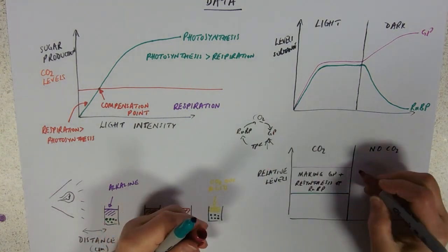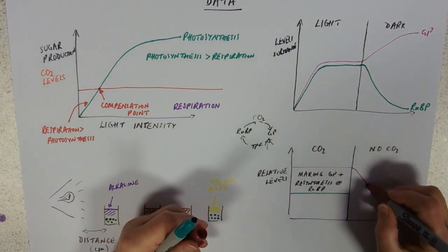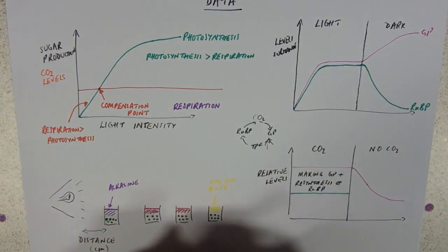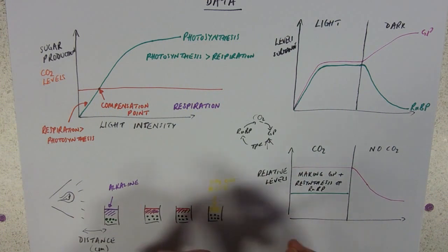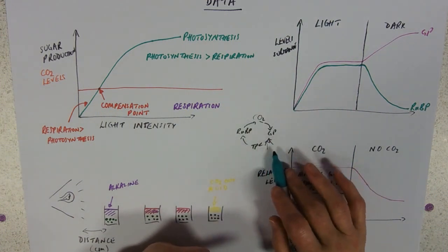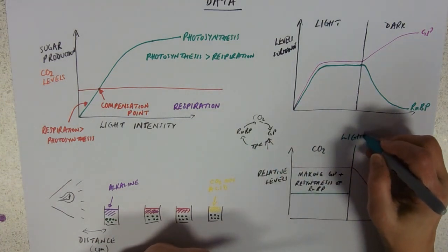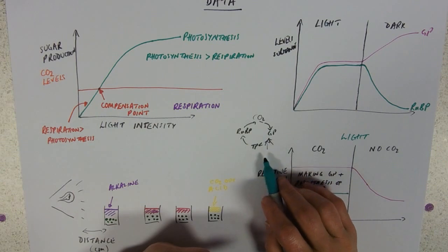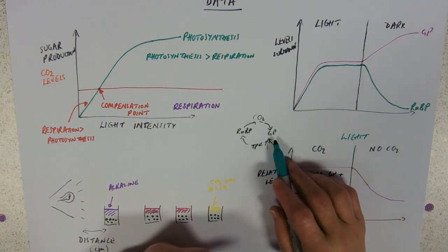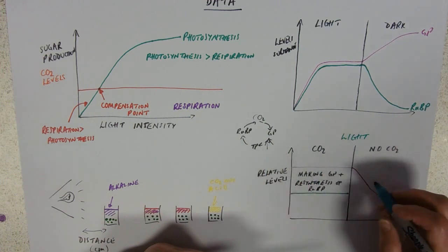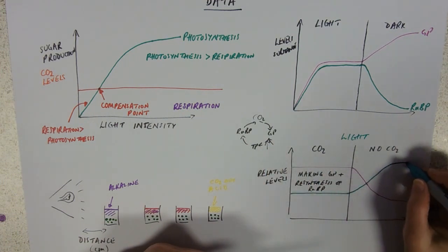And the GP that we've got, provided we've got, this is in the light, remember, so we've got the light on here. We're still getting our light-dependent product, so our GP, whatever's left, will be converted into TP, and resynthesize our RUBP, and those levels will go up.